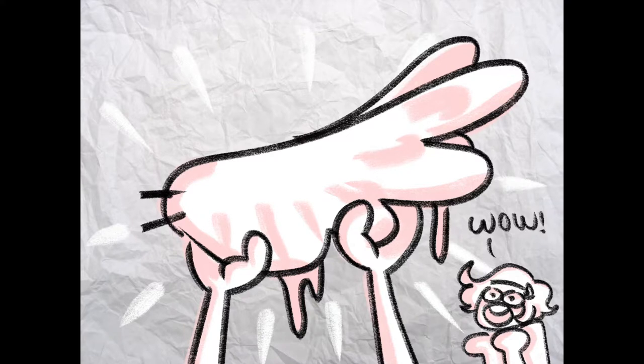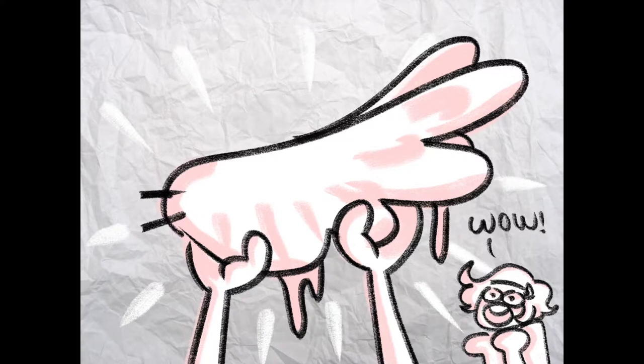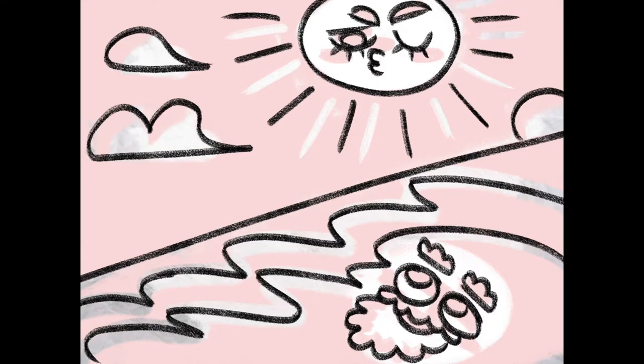After a while, Daedalus constructs wings made of wax and feathers so they can escape. When they're about to escape, Daedalus tells Icarus to not fly too close to the sun because the sun will melt the wax, and not fly too close to the sea because the sea spray will make the wings fall apart.